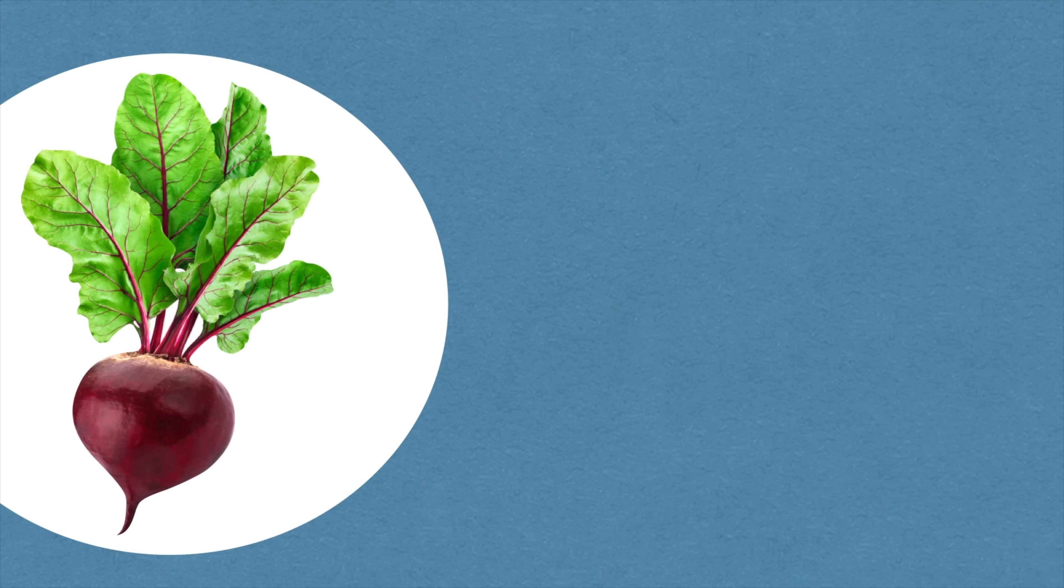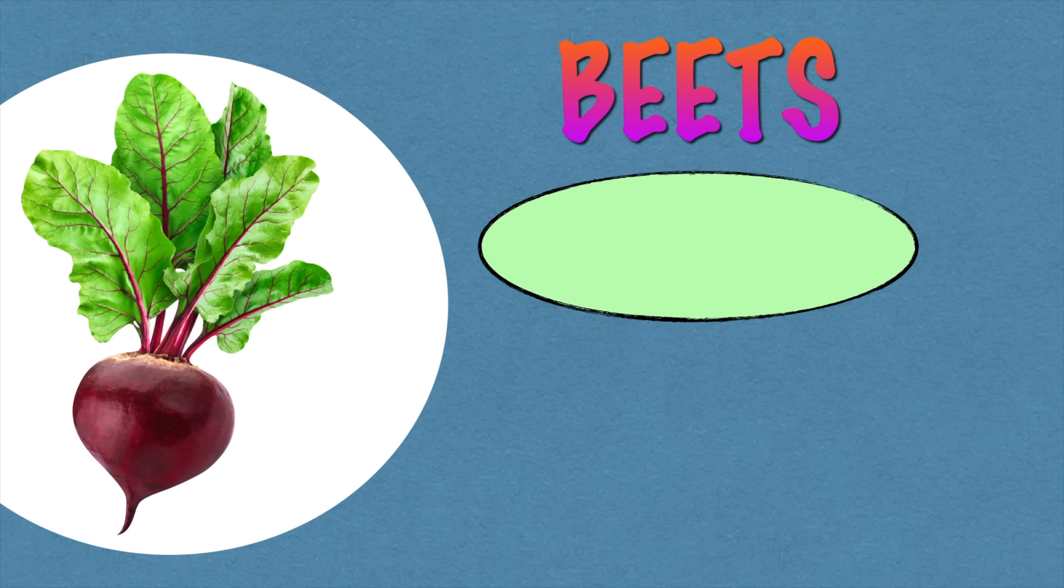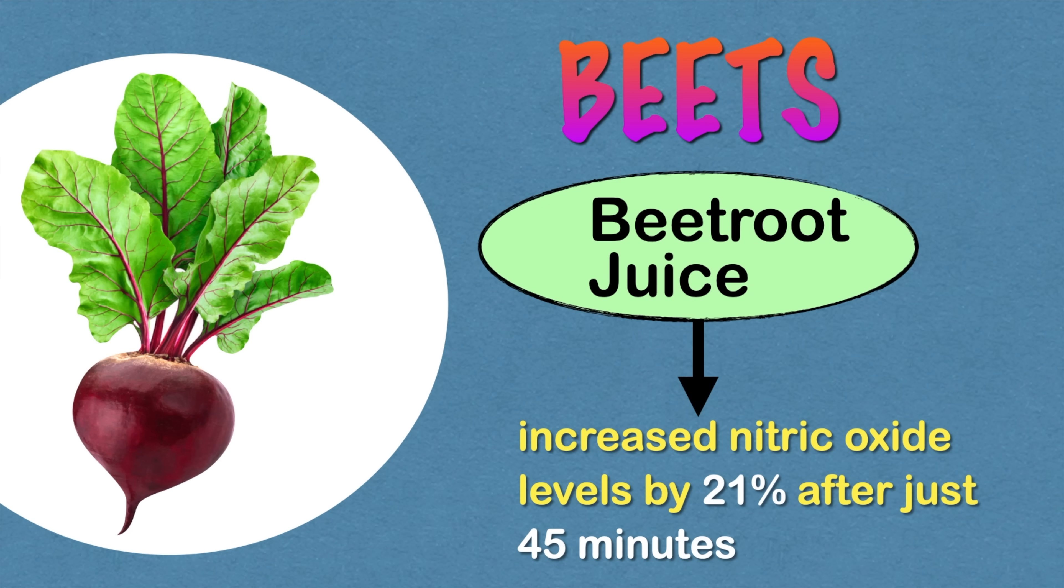Then there are beets. Beets are rich in dietary nitrates which your body can convert to nitric oxide. According to one study in 38 adults, consuming a beetroot juice supplement increased nitric oxide levels by 21% just after 45 minutes.